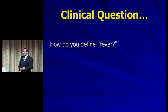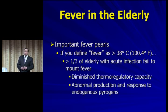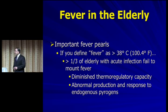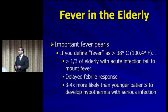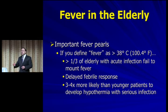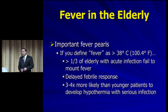How do you define fever? In most patients we think of fever as 100.4°F or 38°C. But using that traditional definition, only about a third of elderly patients who have an acute infection actually have a fever. They have decreased thermoregulatory capacity, abnormal production and response to endogenous pyrogens, and a delayed febrile response. Elderly are also three to four times more likely to develop hypothermia in response to serious, deadly infections. You can't rely on fever as your marker of infection.